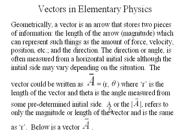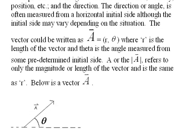If you have just a by itself or the vector a with a little arrow on top with absolute value signs, this refers only to the magnitude or length of the vector and is the same as r. Below is a vector a. Let's take a look at a vector. Here it is.